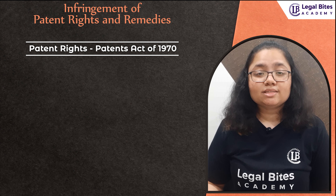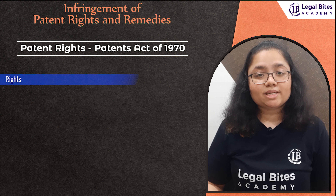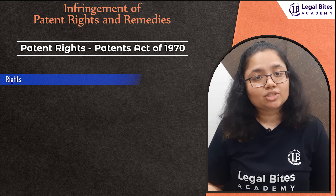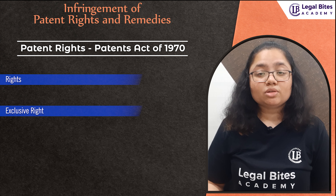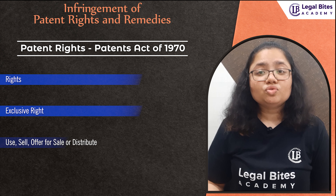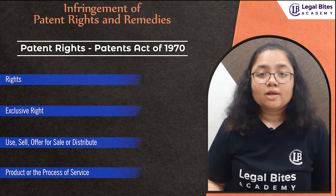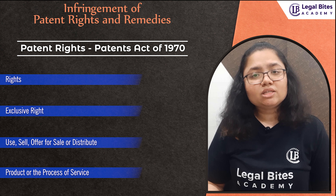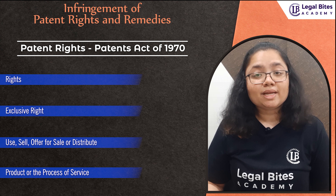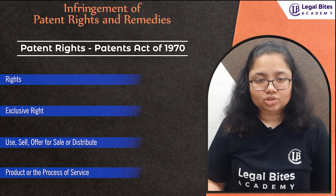Section 48 of the Patents Act of 1970 gives certain rights to the patent holder with respect to his invention. This section gives the exclusive right to the patent holder to use, sell, offer for sale or distribute the product or the process of service which is the subject matter of the patent. He can prevent any other person or entity from doing such acts without his permission.